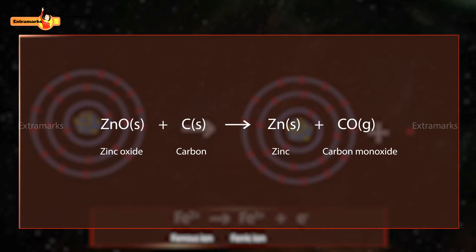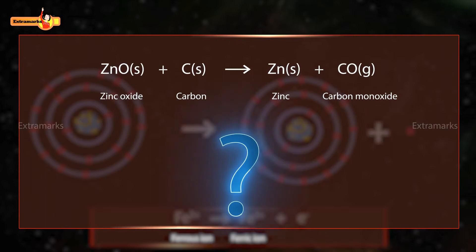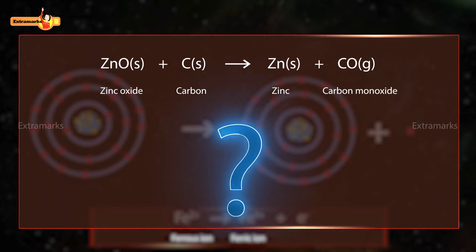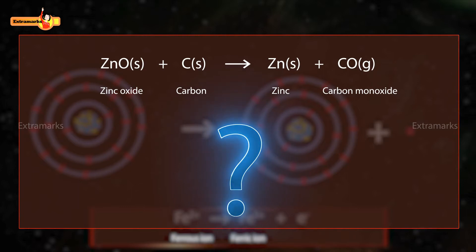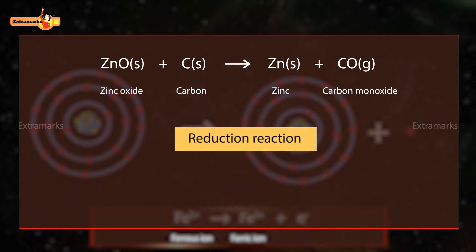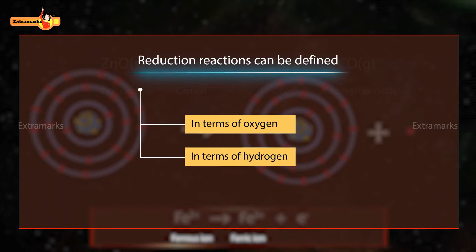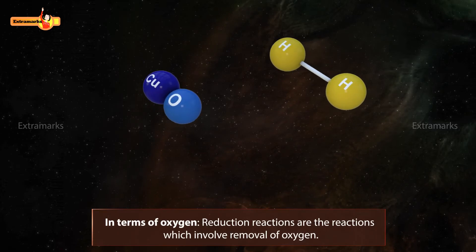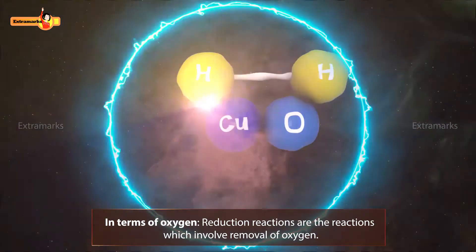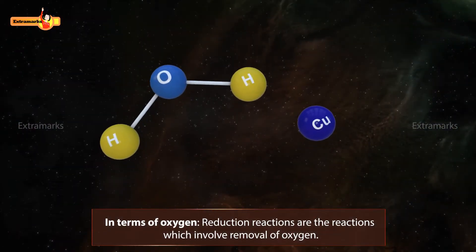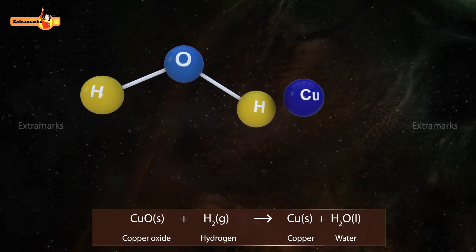Now we know that reactions involving addition of oxygen are known as oxidation reactions. Do we also have a specific name for reactions involving removal of oxygen? Yes, these reactions are known as reduction reactions. Reduction reactions can be defined in terms of oxygen, in terms of hydrogen, and in terms of electrons. In terms of oxygen, reduction reactions are the reactions which involve removal of oxygen. Here, oxygen is removed from copper oxide.